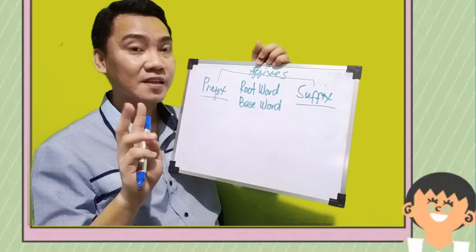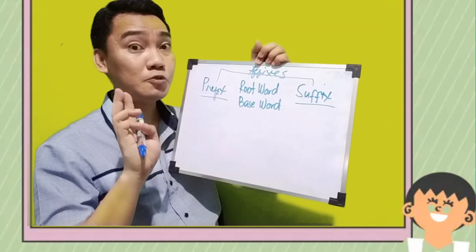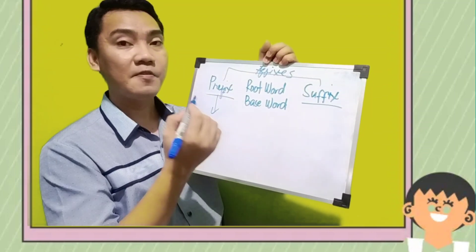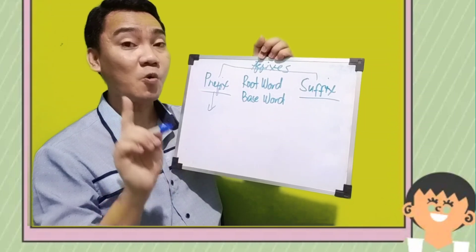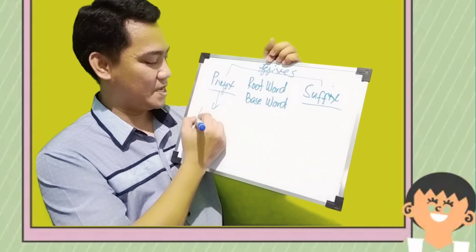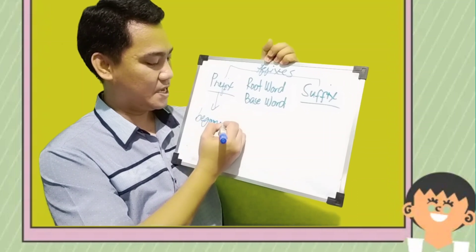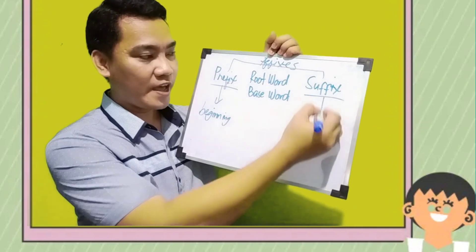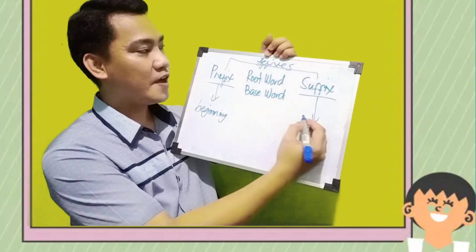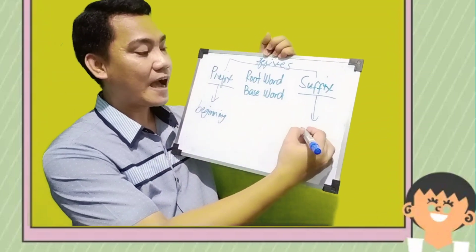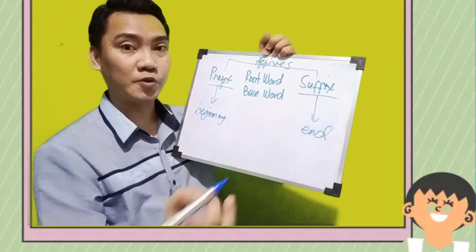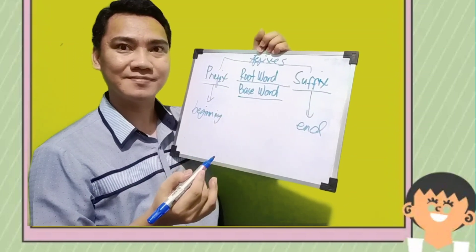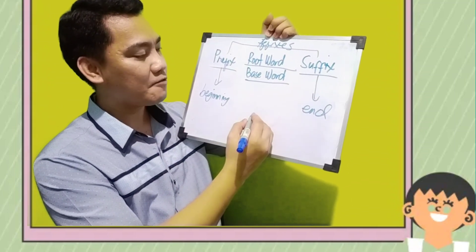When we say prefix, these are letters or syllables added at the beginning of a root word. On the other hand, suffix refers to letters or syllables added at the end of a root word. Remember, the other word for root word is base word.